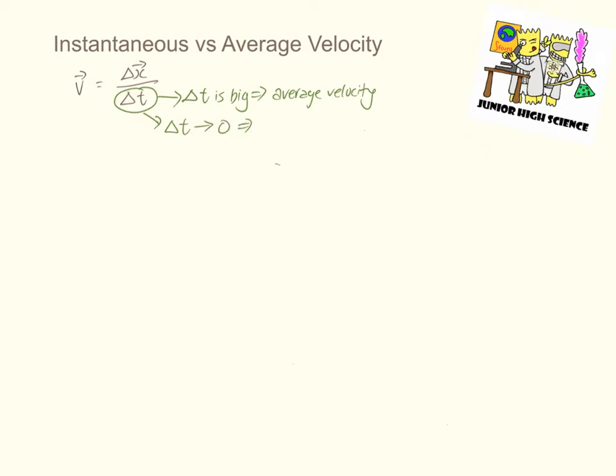Now, if the time interval tends to zero, it becomes smaller and smaller and smaller, then the whole equation will allow you to get the instantaneous velocity.